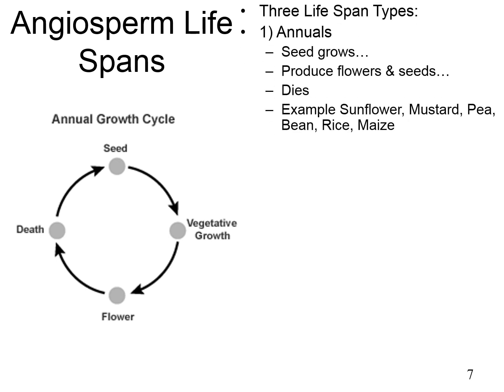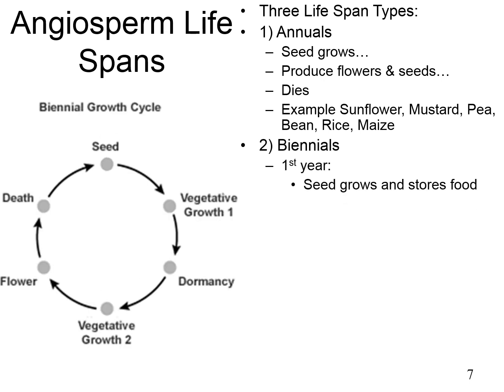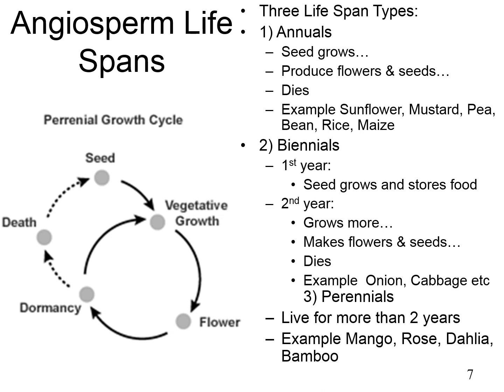Annuals are plants which complete their life cycle — growth, flowering, and death — within the same season. Examples include sunflower, mustard, bean, rice, and maize. Biennials complete their life cycle in two years: vegetative growth occurs in the first year, and flowering and fruit development in the second year. Examples include members of the onion and cabbage families. Perennials live for more than two years, producing flowers, fruits, and seeds every year — examples are mango, roses, and bamboo.